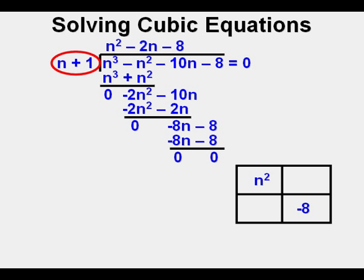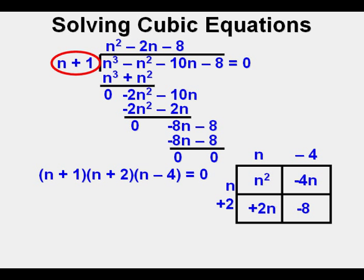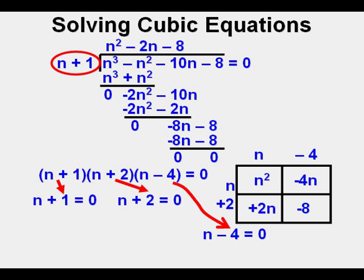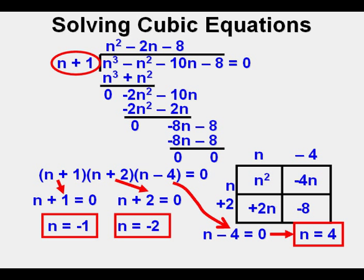Now we need to factor the remaining trinomial n squared minus 2n minus 8. We'll put the n squared and the negative 8 terms in the box. In order to get the negative 2n linear term, we need n minus 4 as a factor and n plus 2 as a factor. So broken into factors, n cubed minus n squared minus 10n minus 8 equals 0 is the same as quantity n plus 1 times quantity n plus 2 times quantity n minus 4 equals 0. These three binomials break down to n plus 1 equals 0, n plus 2 equals 0, and n minus 4 equals 0. So the solutions are n equals negative 1, n equals negative 2, and n equals 4.